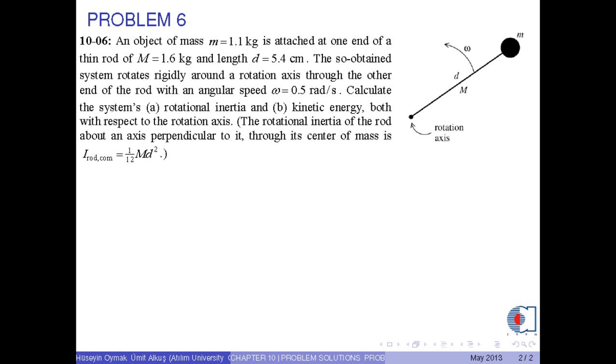An object of mass m is attached at one end of a thin rod of mass M and length d. The system rotates rigidly around the rotation axis through the other end of the rod with an angular speed omega which is 0.5 radians per second.